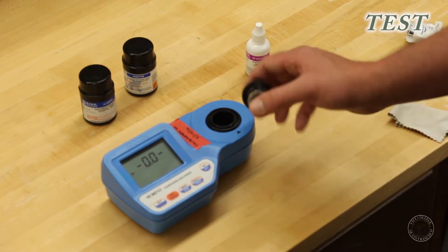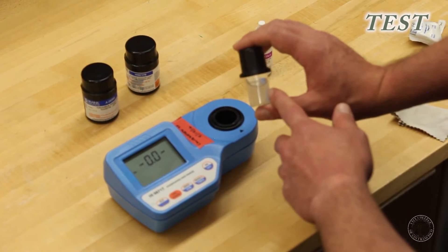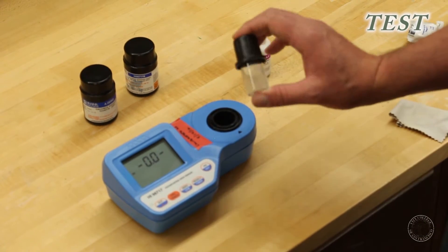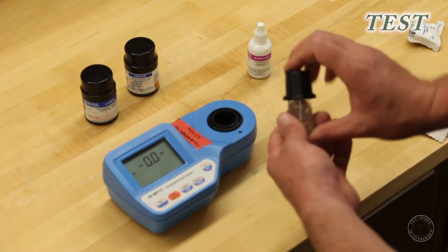And you'll be able to tell instantly if you do have any phosphates, because this will start to turn a pinkish red color. But this is drinking water, so it's good to see nothing changing.